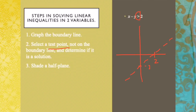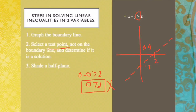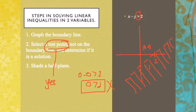The second step is the test point. Use (0, 0) as your test point. We substitute: 0 minus 0 greater than 2 — is 0 greater than 2? No, 0 is not greater than 2. Since the test point answer is no, we shade the opposite side. If the answer is yes, shade that side; if no, shade the opposite.